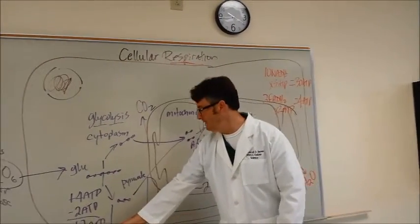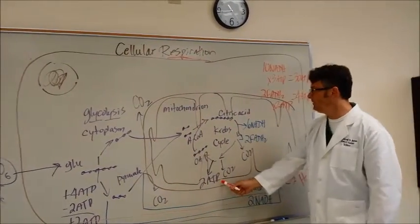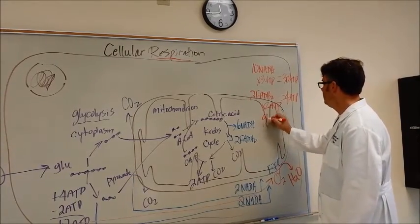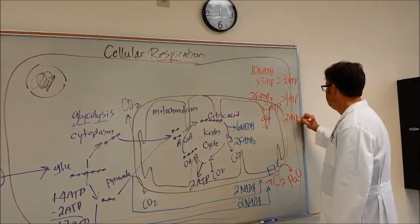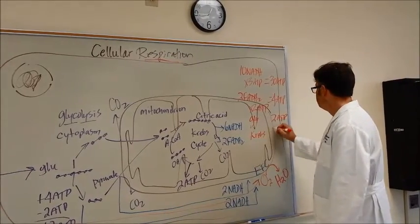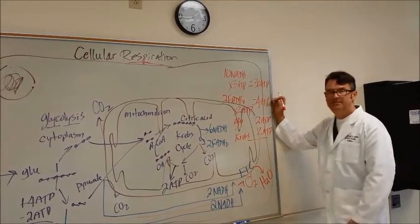How many ATPs did I get from glycolysis? Two. And how many did I get from Krebs? Two. So I got glycolysis, I got two ATP. And I got from Krebs, I got two ATP. So help me, 30 plus four makes 34.